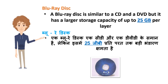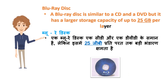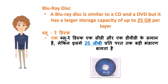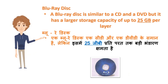Blu-ray disk: A Blu-ray disk is similar to a CD and a DVD but it has a larger storage capacity of up to 25GB per layer. Ek Blu-ray disk ek CD aur ek DVD ke samaan hai, lekin isme 25GB prati parat tak badi bhandaran kshamta hai.